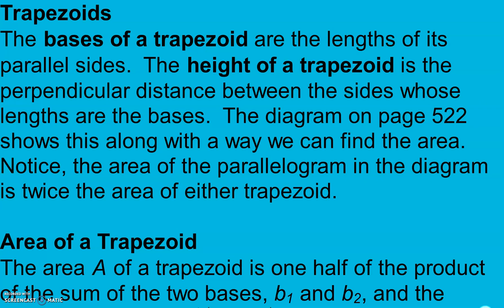With trapezoids, the bases are the lengths of its parallel sides. The height of the trapezoid is the perpendicular distance between the sides whose lengths are the bases — straight up, perpendicular, 90 degrees. There's a diagram on page 522. Notice the area of a parallelogram in the diagram is twice the area of either trapezoid — take note of that.